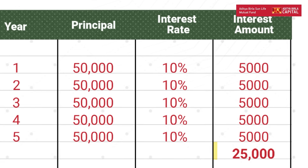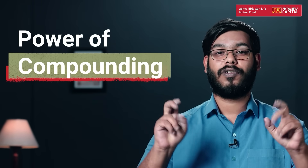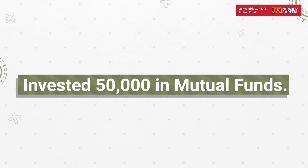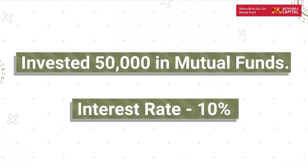Ankit will simply earn 10 percent on ₹50,000 every single year. Thereby, the total returns made by Ankit over five years is ₹25,000. Now that you have understood simple interest, it is time to talk about compound interest and the power of compounding. The difference is just that compound interest gives you interest on interest. Let us go back to Ankit's example, but this time assume Ankit invests ₹50,000 into a mutual fund and gets 10 percent year on year.